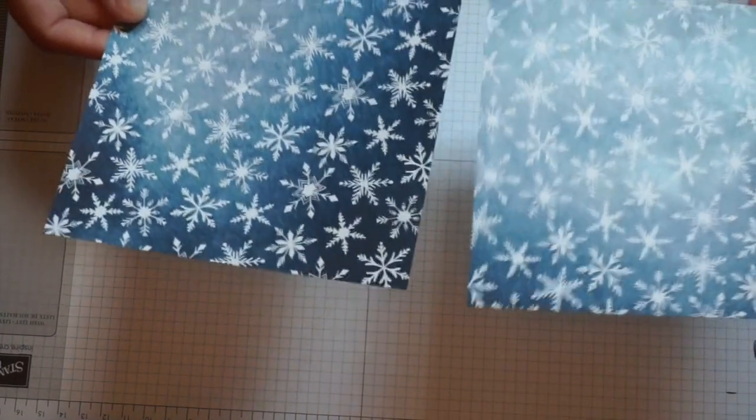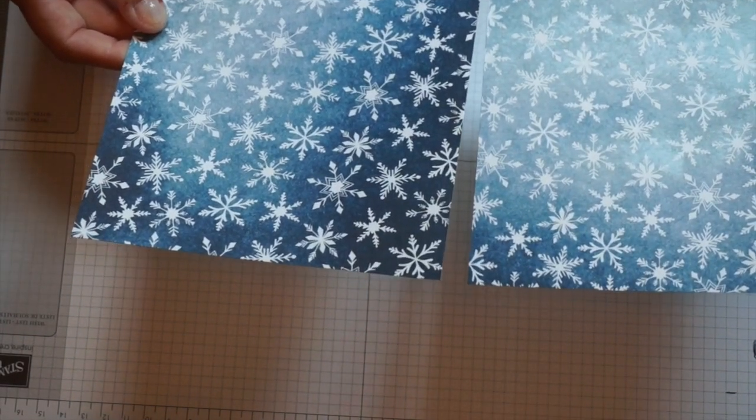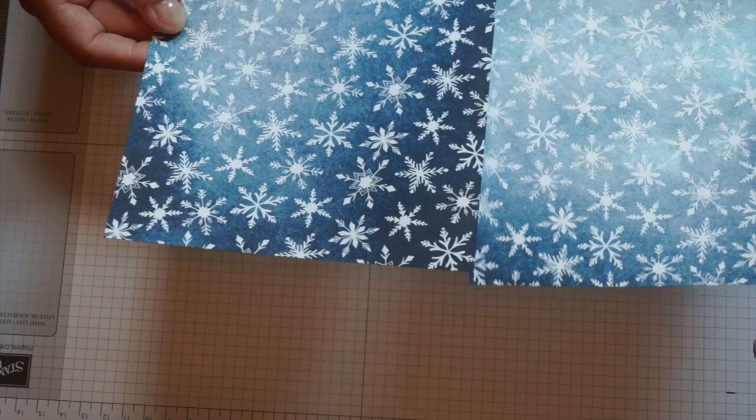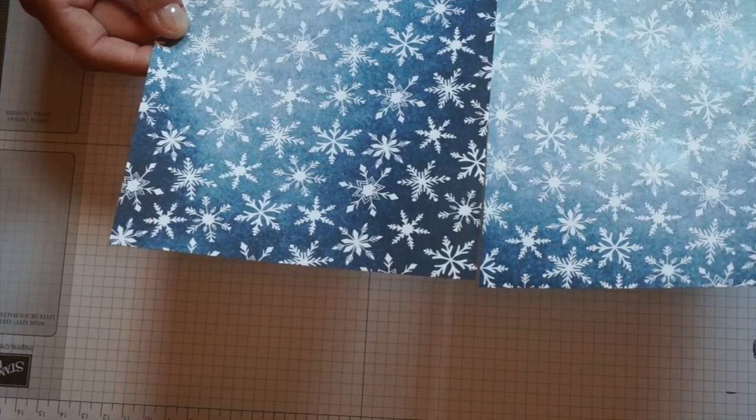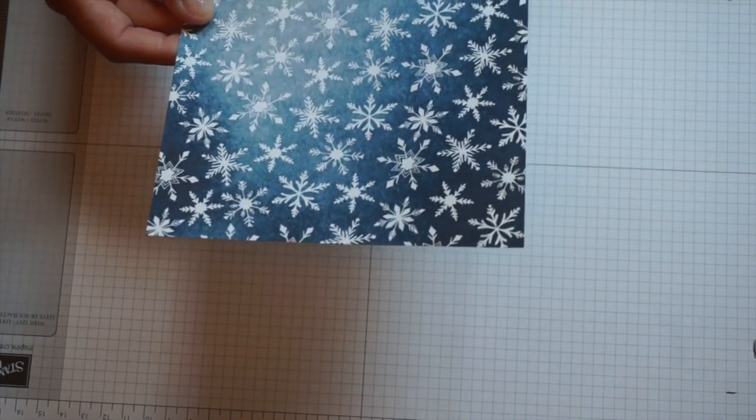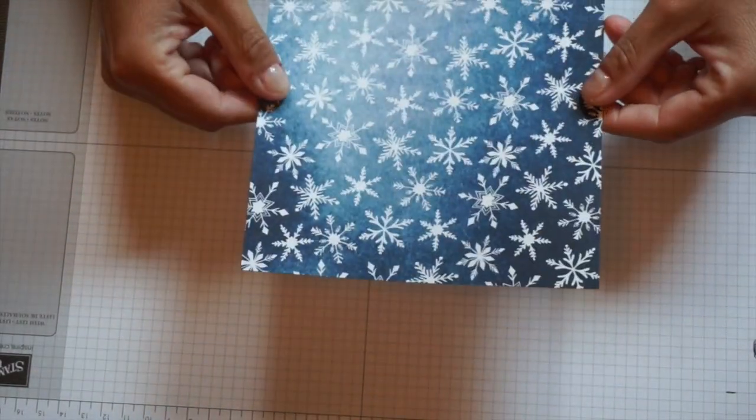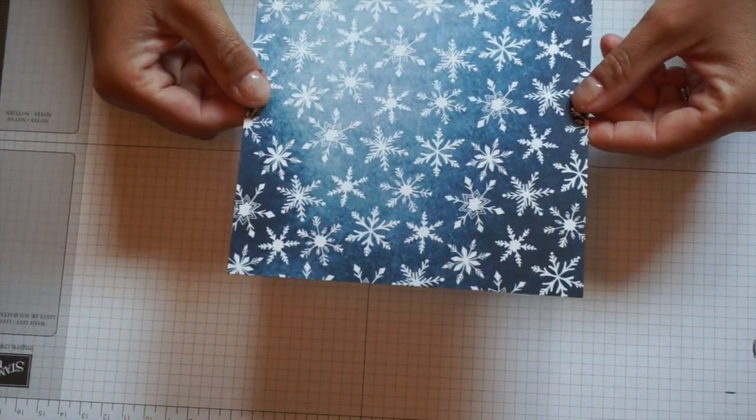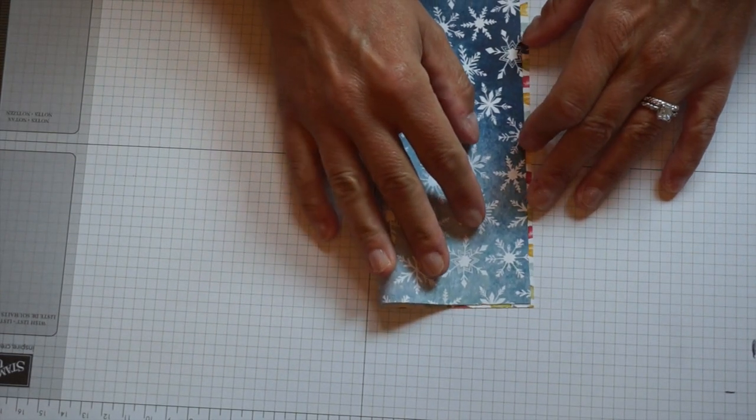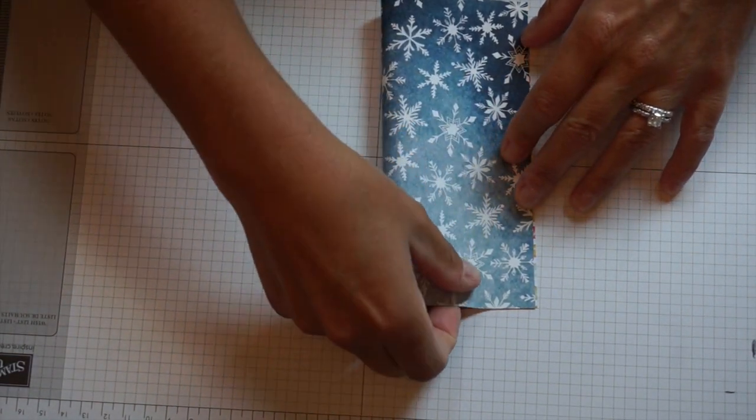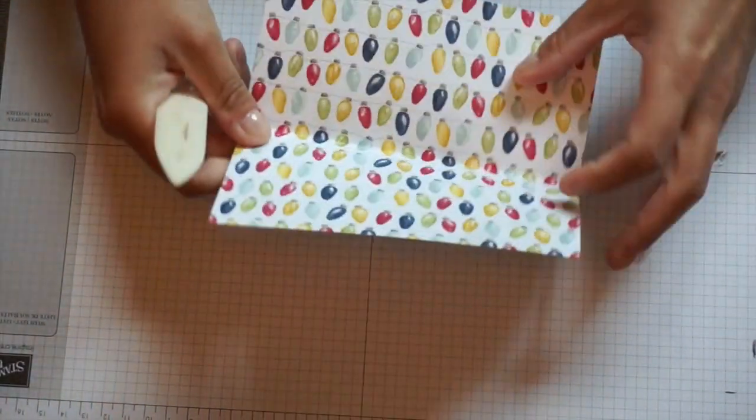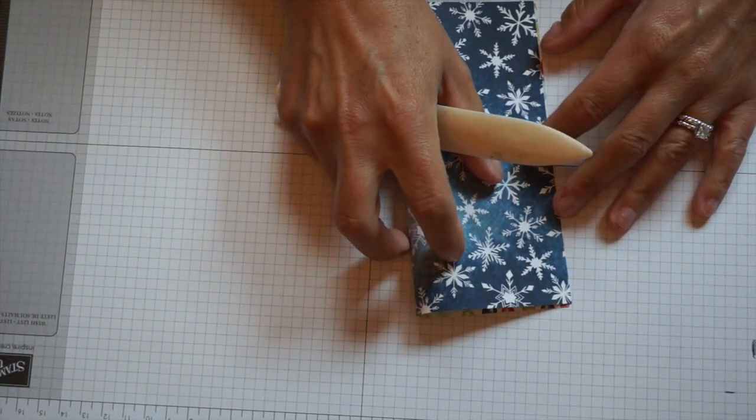To make the star you will need two pieces of 6 by 6 DSP. I haven't made this star with cardstock yet, so I'm not sure how it would turn out, but you can give it a try. We're going to do exactly the same thing to both pieces of paper. You'll decide which side you want facing out, and we're going to face the stars out. The first thing you do is fold it across longwise, get your bone folder, burnish those fold lines, then do the same going the other way.